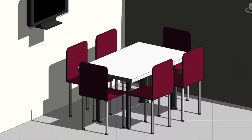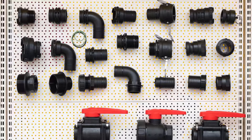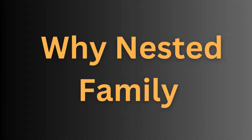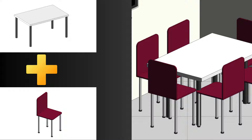Nested families are not just limited to basic table and chair. You can use them for a wide range of components like pipe accessories, mechanical equipment, nesting doors and handles, windows, mullions, and connectors. Nested families are more effective than normal families because we can easily manipulate and customize the entire family system without compromising efficiency or accuracy. That's why nested families are far better than normal families.